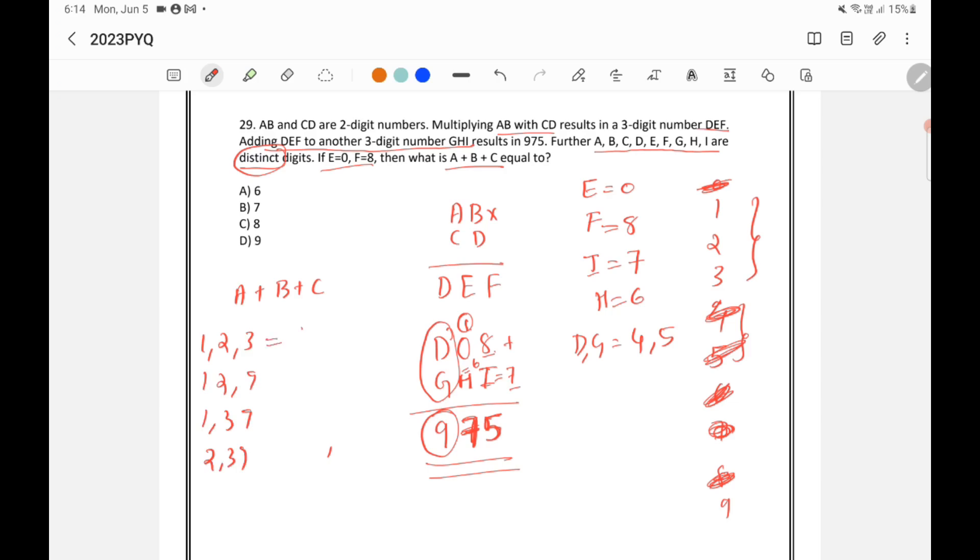Now if you add 1, 2, 3 it will be 6. If you add 1, 2 and 9 it is 12. If you add this one it is 13 and if you add this one it will be 14. 2 plus 3 is 5, 5 plus 9 is 14. So the only option available here if you see 6 is the only one common. So 6 will be the answer.